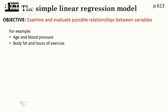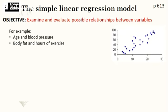Another pair of variables as an example is body fat and hours of exercise. Naturally, someone who exercises more is more likely to have lower body fat than someone who doesn't exercise as much, so there's going to be a connection there. Typically you're going to plot a graph. For each person you record the two variables — body fat and hours of exercise — and then plot those on a graph. Each of these little points represents a person. On the horizontal axis I would have hours of exercise, and on the vertical axis I would have body fat.